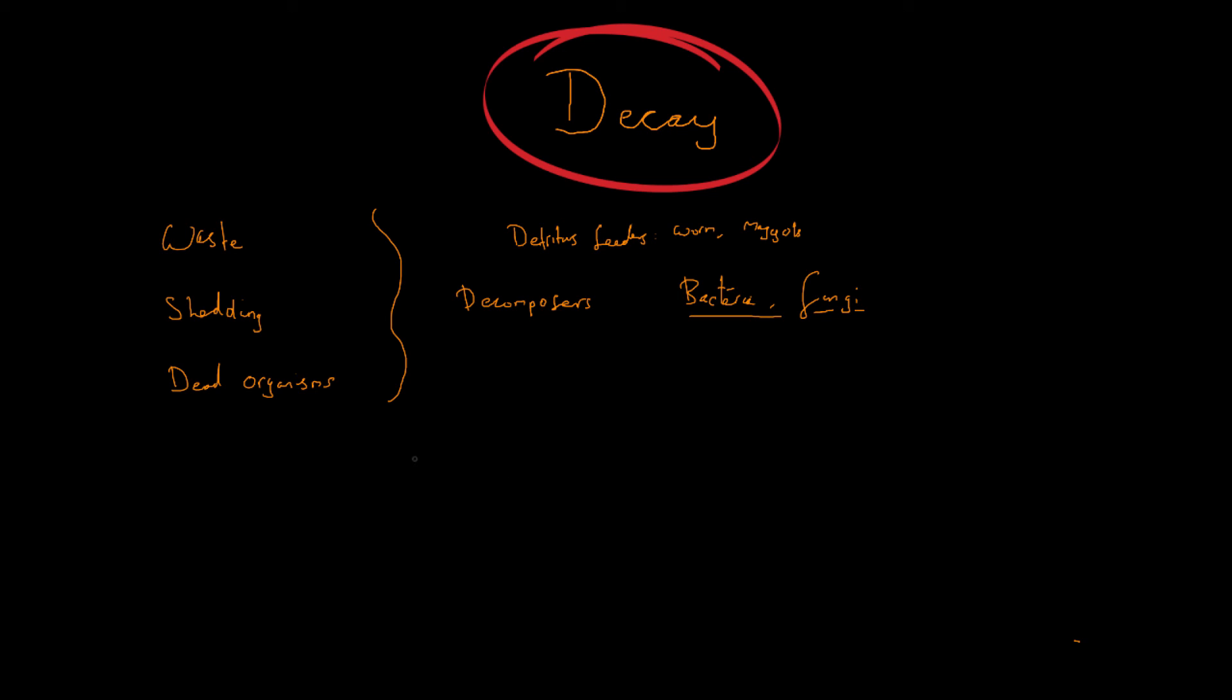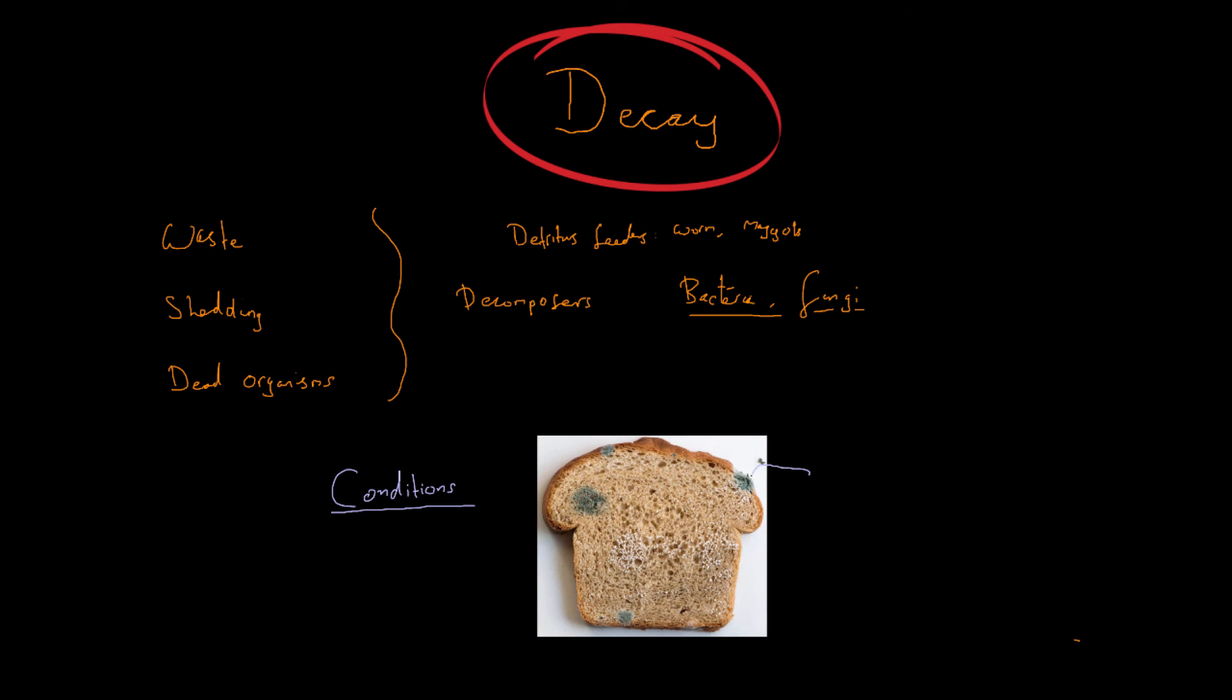Now it's important to note that there are specific conditions which allow the decay process to occur or which allow it to occur at its optimal rate. As an example, I'm sure perhaps you've seen this occur when you've left bread in the cupboard for too long. You leave your bread in the cupboard and you get these patches of mold, and that mold is actually the decomposers breaking down the bread. So the bread has gone off, this is not safe to eat anymore, but that's because we have these organisms breaking down the bread and digesting it. This is decay.